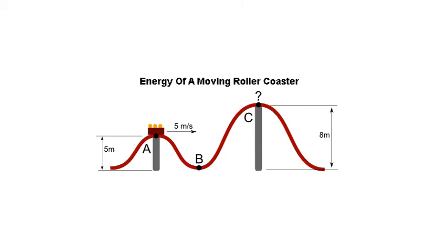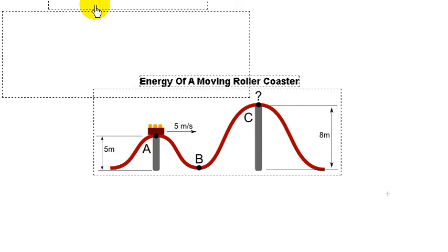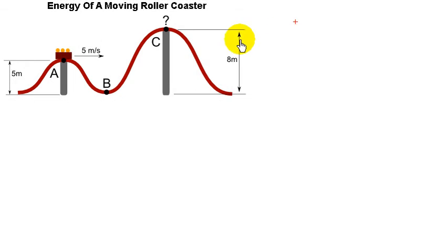Energy of a moving roller coaster. Here's a problem related to the law of conservation of energy. You have a roller coaster with two hills in this section. The first hill is five meters tall. The second hill is eight meters tall.